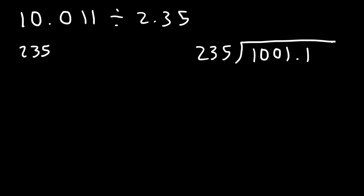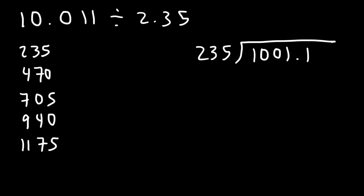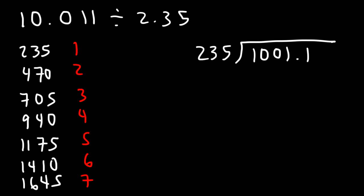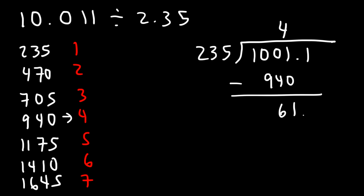The list: 235, 470, 705, 940, 1175, 1410, 1645. Typically you only need to go up to 10 in long division. Now 235 goes into 1001 four times — 235 times 4 is 940. Subtracting 1001 minus 940 gives us 61. Now let's bring down the .1.